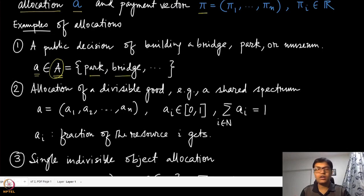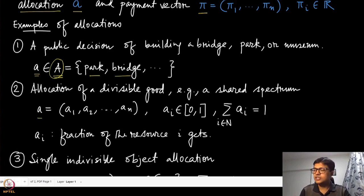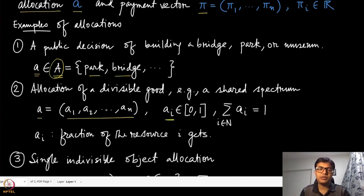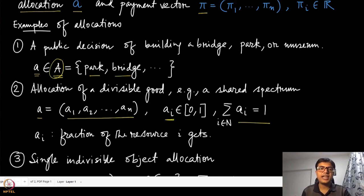Similarly, the allocation could be that of a divisible good. For instance, a spectrum is a divisible good and can be shared among different players. In that case, we define A as a vector (a_1, ..., a_n) where each a_i is a real number in the interval [0, 1] and together they sum to 1. The entire spectrum is of unit size and each agent receives some fraction of that spectrum.